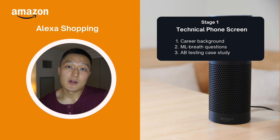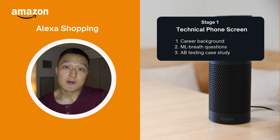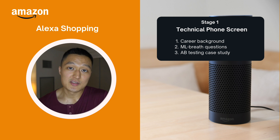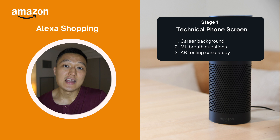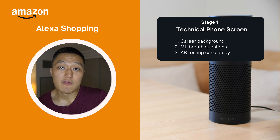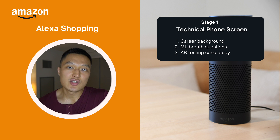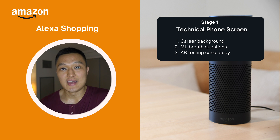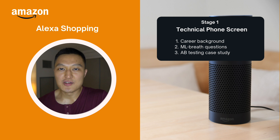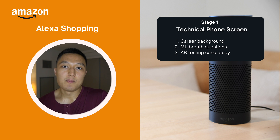Here's an example of what the interview process looked like for a client I coached who prepared for the Alexa Shopping data scientist interview. In the technical phone screen, the 60-minute interview with a senior data scientist covered three areas. First was a career background discussion taking about 20 minutes, where she walked through end-to-end how she solved a machine learning project. The interviewer asked four to five follow-up questions like, 'Why did you choose this method for feature selection?' You really need to know the ins and outs of everything on your resume.